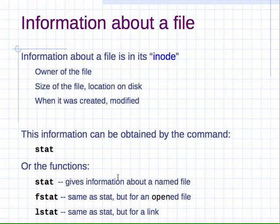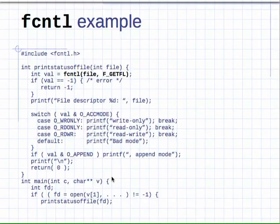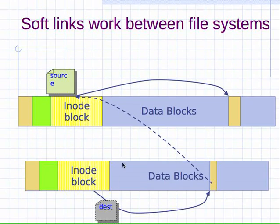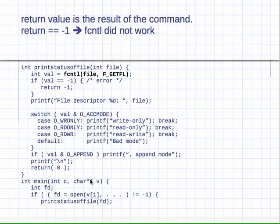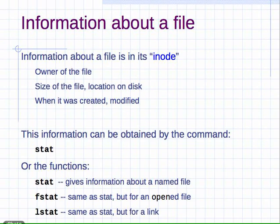To clarify: if you have a symbolic link and you call the `stat` function on it, it will go through to the target and give you information about what's stored in that inode table — not about the link itself. So to get information about the link itself, we use `lstat`. There's also `fstat`, which gives information for an open file descriptor. Often we won't want to open a file just to get information about it, so we use `stat` or `lstat`. The key difference is that `lstat` works differently for links.